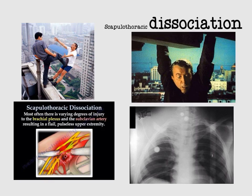From the name, we can conclude that scapulothoracic dissociation is a dissociation of the scapula and the arm away from the chest. The danger of this condition comes from the fact that it will lead in many cases to rupture of important structures in the shoulder, like the brachial plexus and subclavian artery.